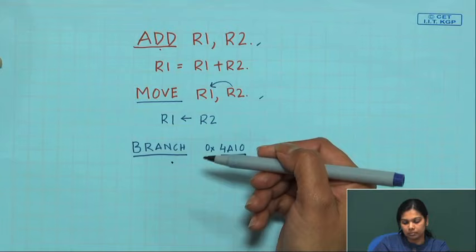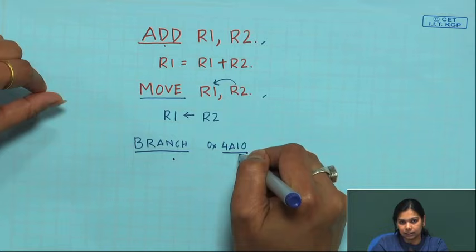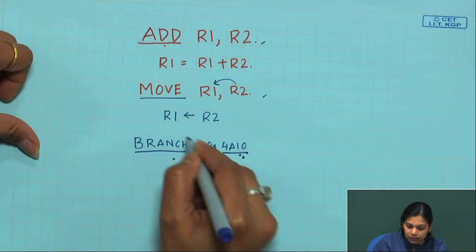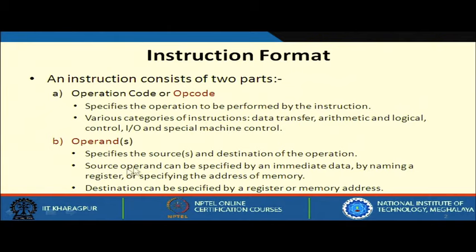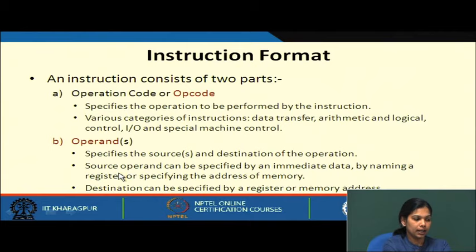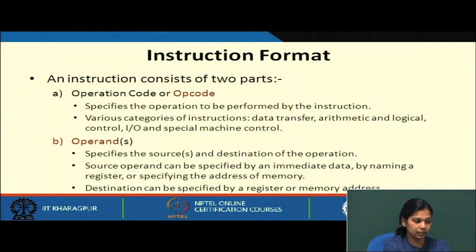Branching to a location means some instruction is present at that location which needs to be executed. The branch address will be added with PC to calculate the current instruction to be executed. The part of the instruction specifying the operation is the opcode and the other part is the operand. Operands specify either a single source, or two sources and a destination. An operand source can be specified by immediate data — just a number.